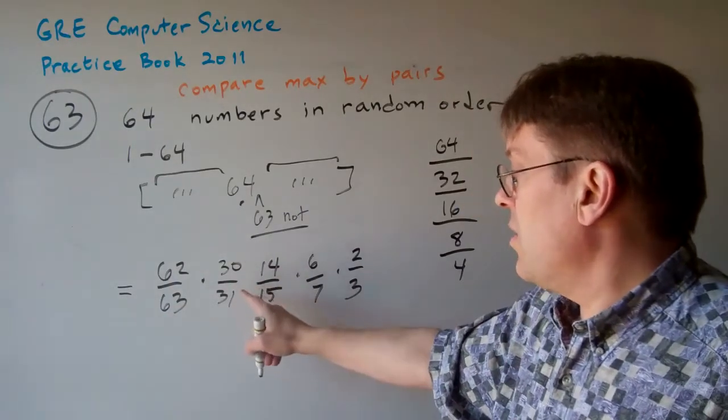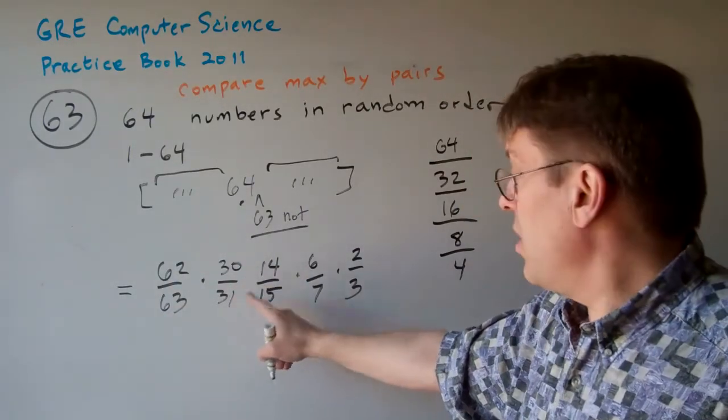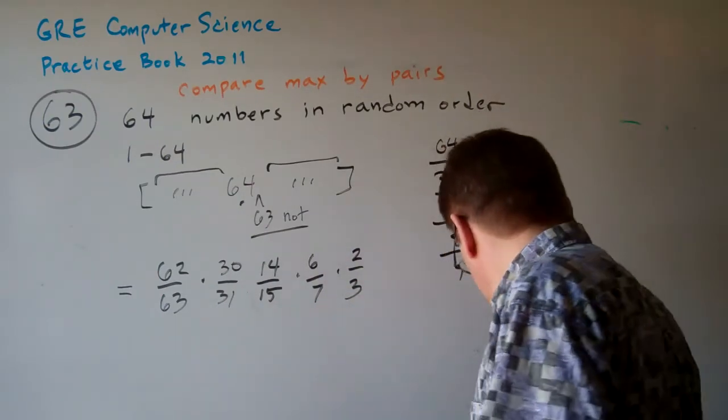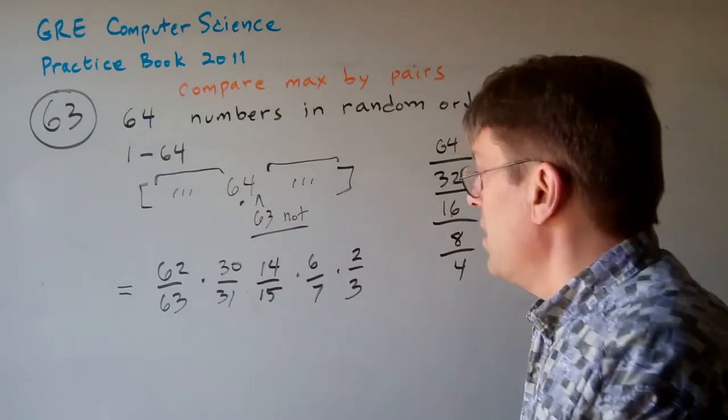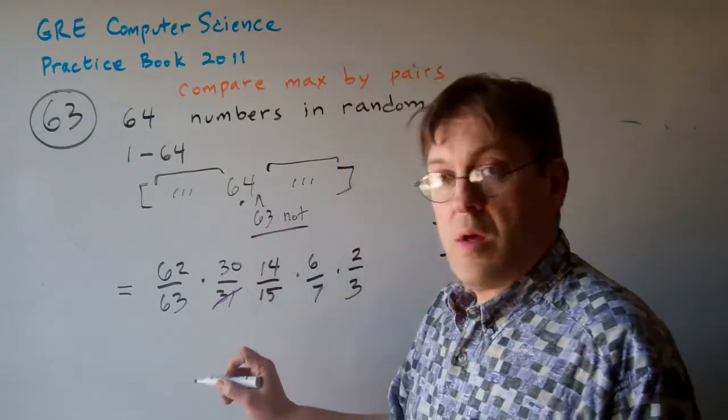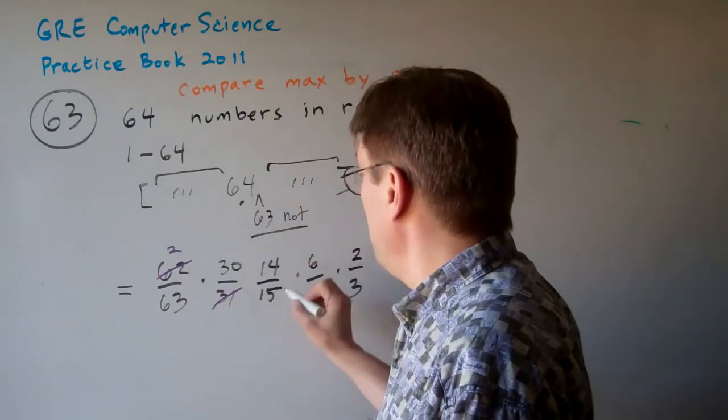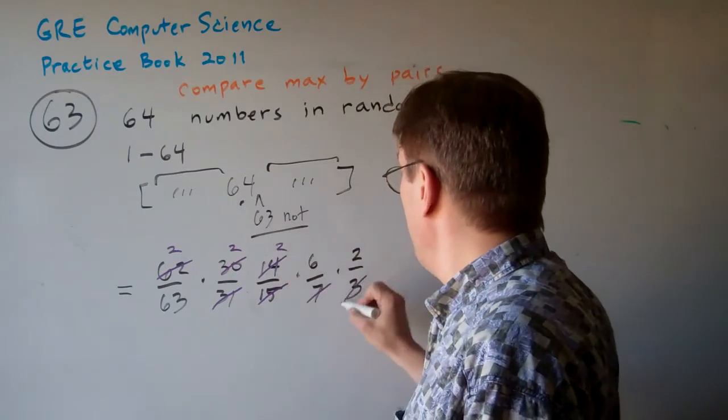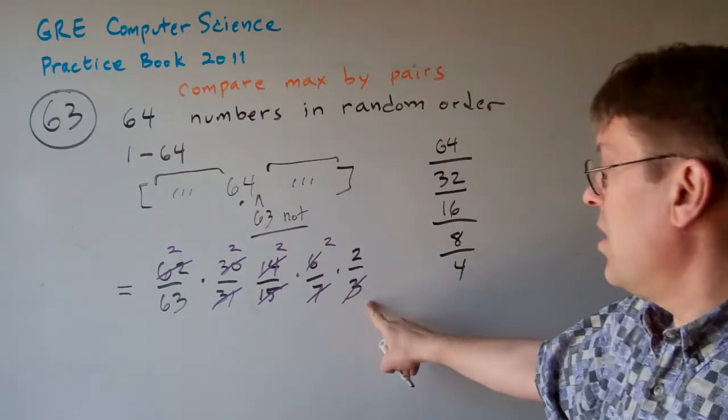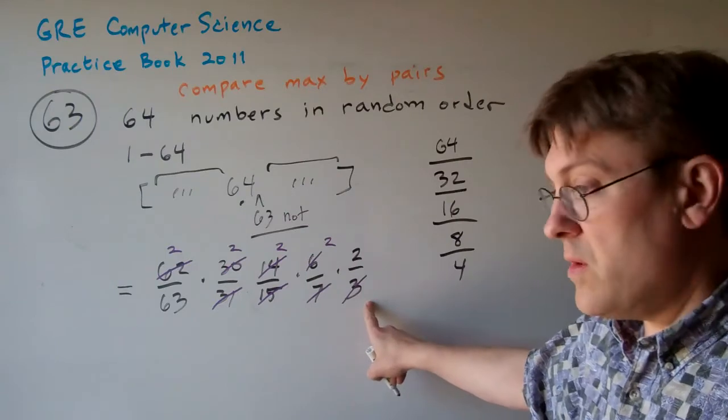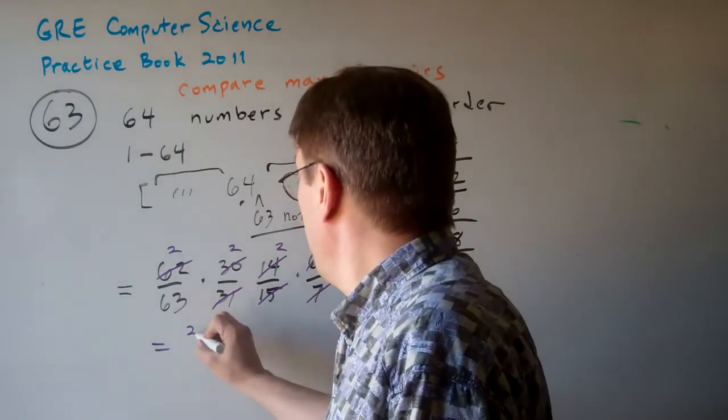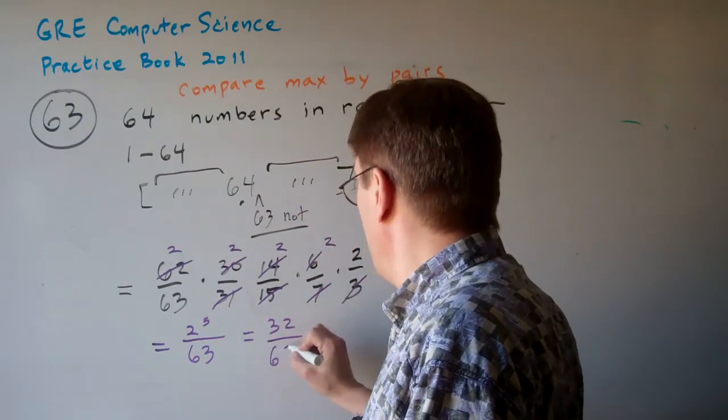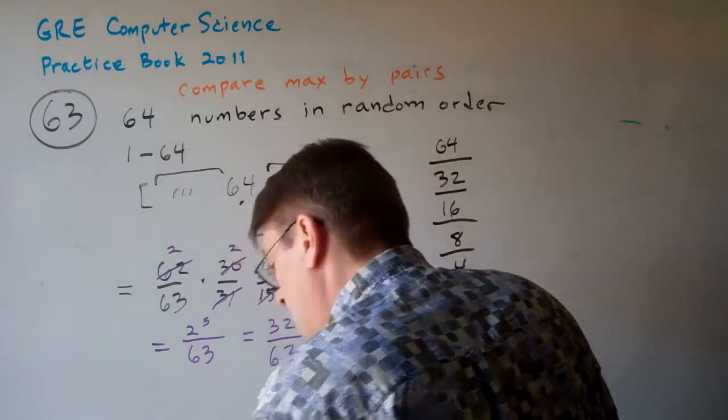So this is the number here: 62 divided by 63 times 30 divided by 31 times 14 divided by 15 times 6 divided by 7 times 2 divided by 3. Now, as you can imagine, this reduces. 31 divides into 62 and this becomes a 2. 15 divides into 30 and this becomes a 2. 7 divides into 14 and this becomes a 2. 3 divides into 6 and this becomes a 2. So we have now 2 to the 5th over 63, which is 32 over 63.